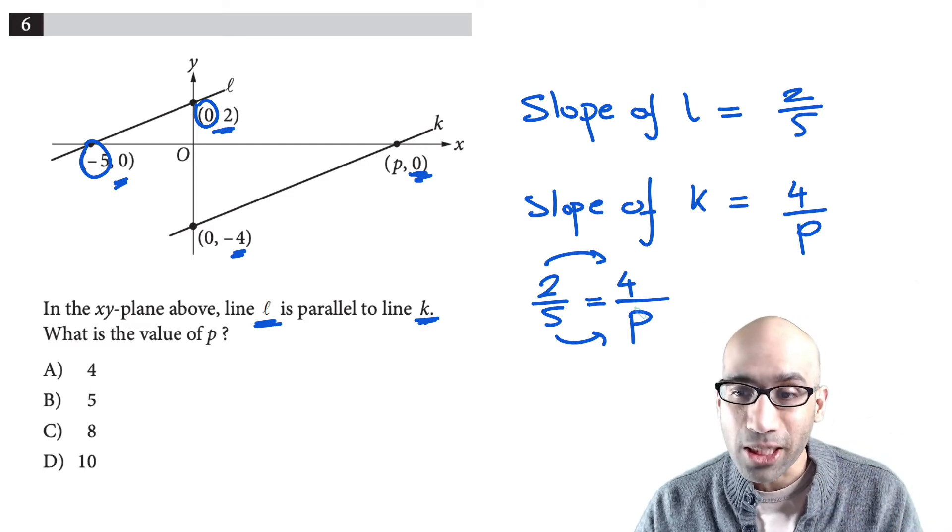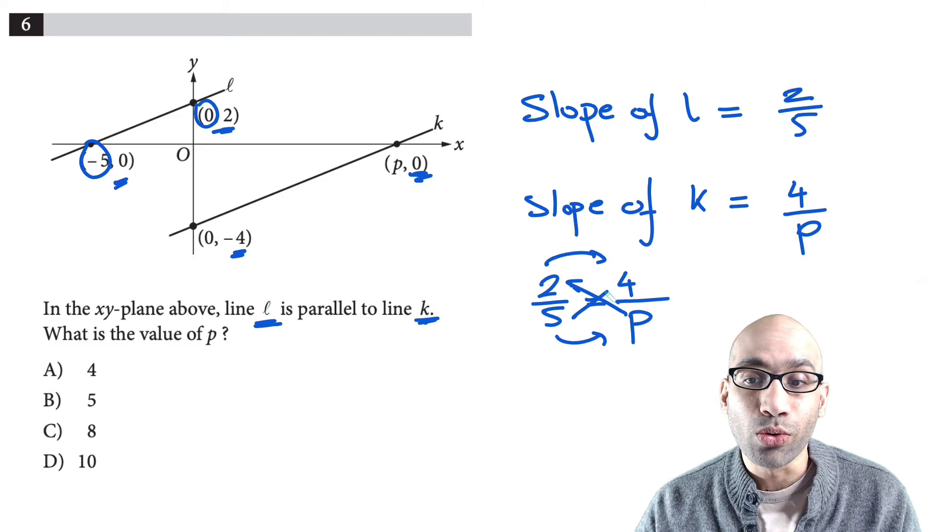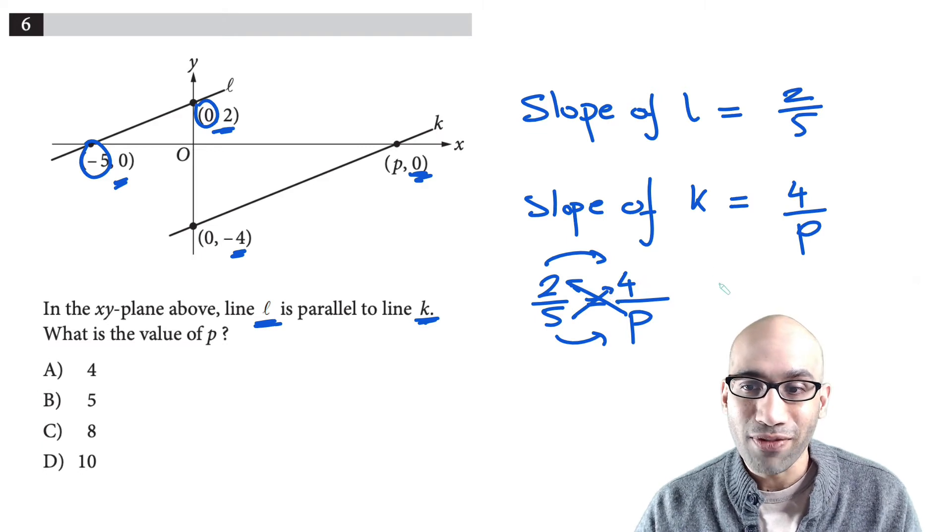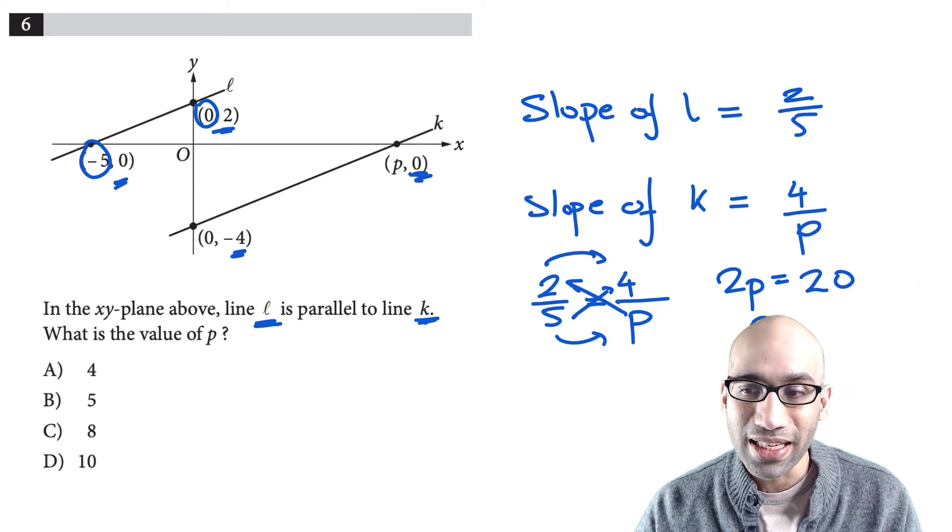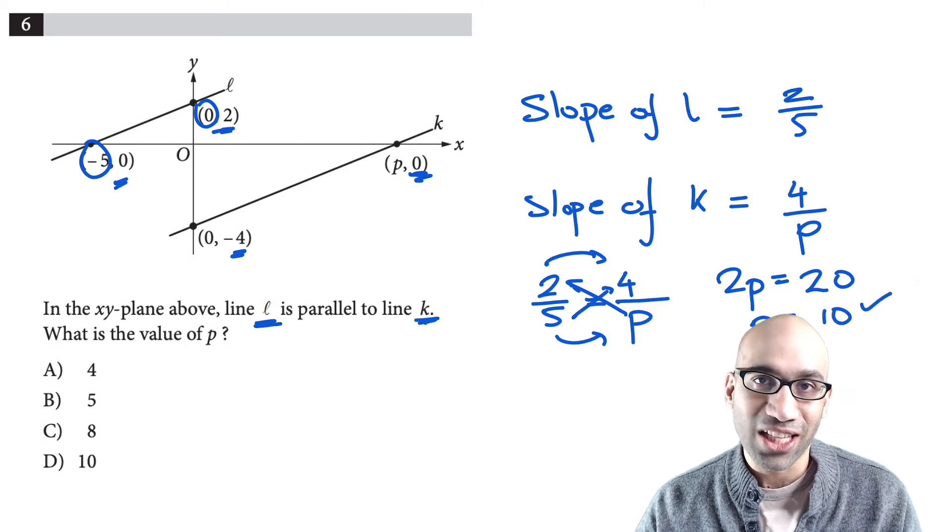Or you can just cross multiply. 2p is equal to 4 times 5, so you write 2p is equal to 20, or then you divide by 2 to get p is equal to 10. And that's your answer.